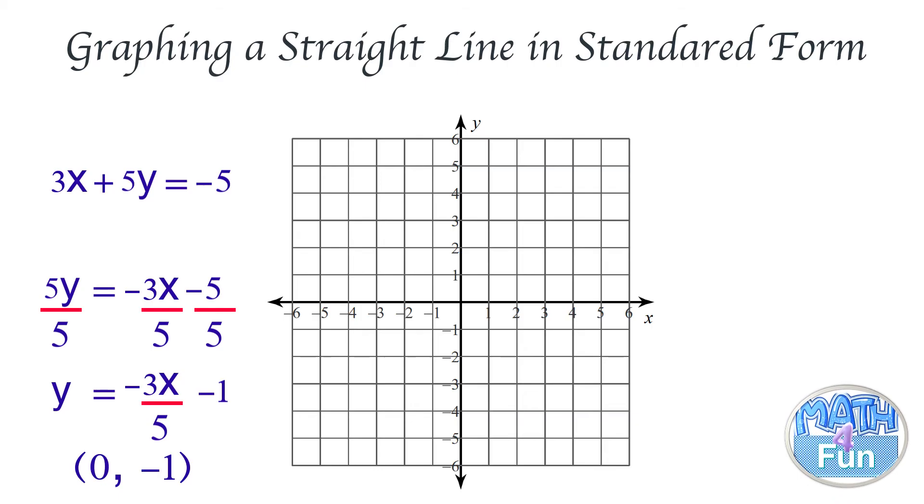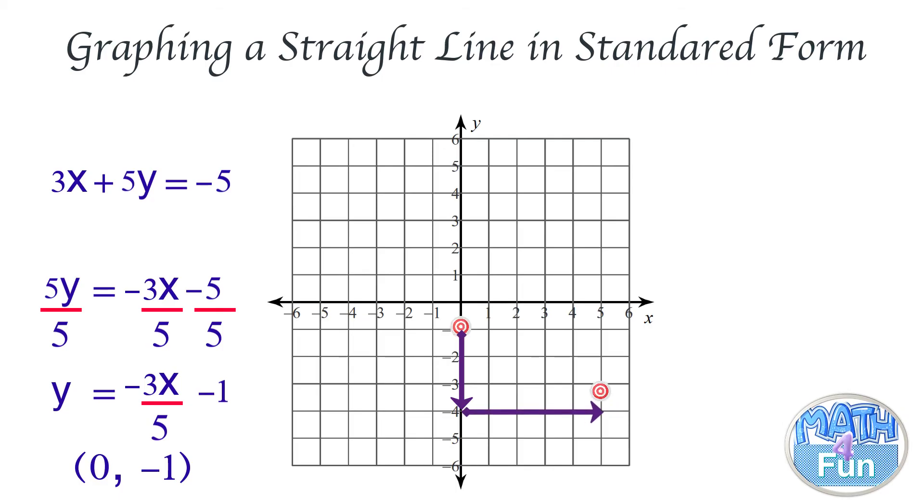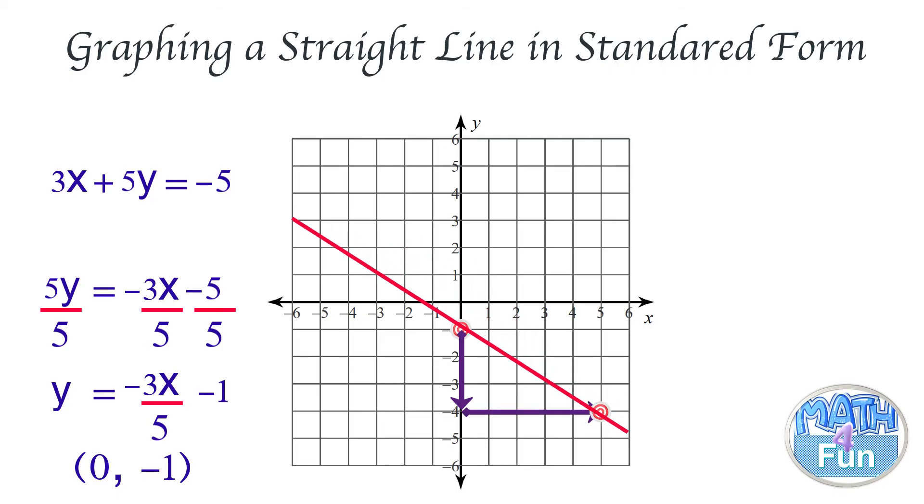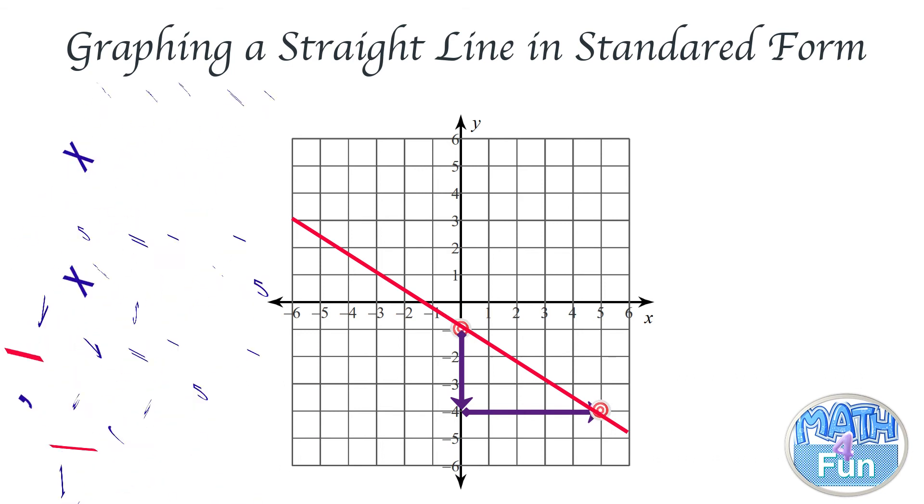Now we do the line. The y-intercept is -1, which means it's at (0, -1). We do -3 going down: 1, 2, 3, and then 5 is the run, which means we go to the right 5 units: 1, 2, 3, 4, 5. Then we join the points and that's it.